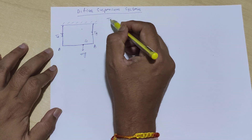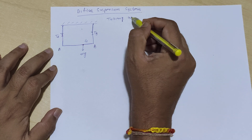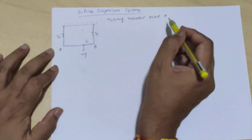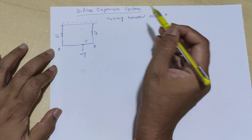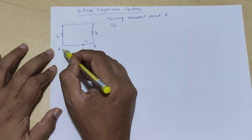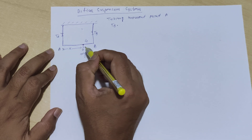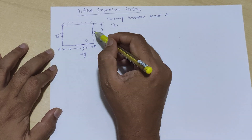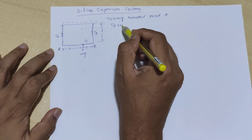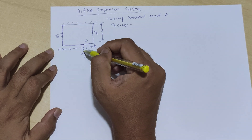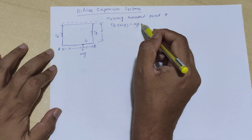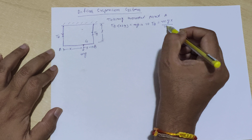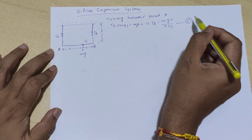Now, in this situation, let us take the moment about point A. At point A, the downward force is mg and the upward force is TB. Let us assume this distance is x, this distance is y, and the length of this string is equal to L. So TB (upward force) into (x plus y) will be equal to the downward force mg into x. We are interested in TB, which equals mgx divided by (x plus y). Let us say this is equation number 1.